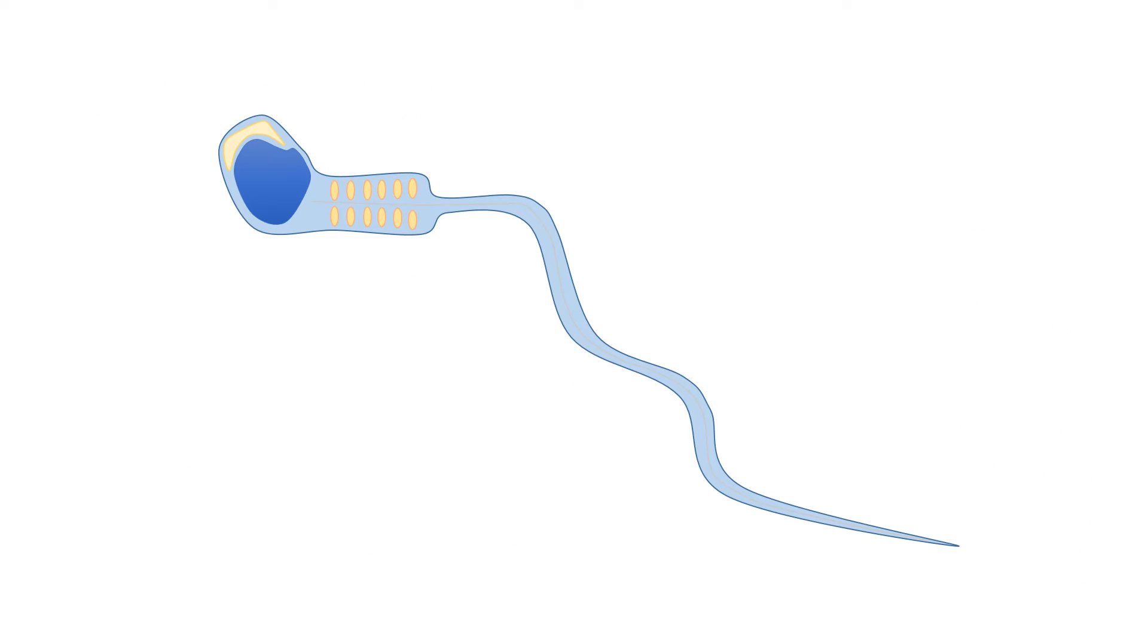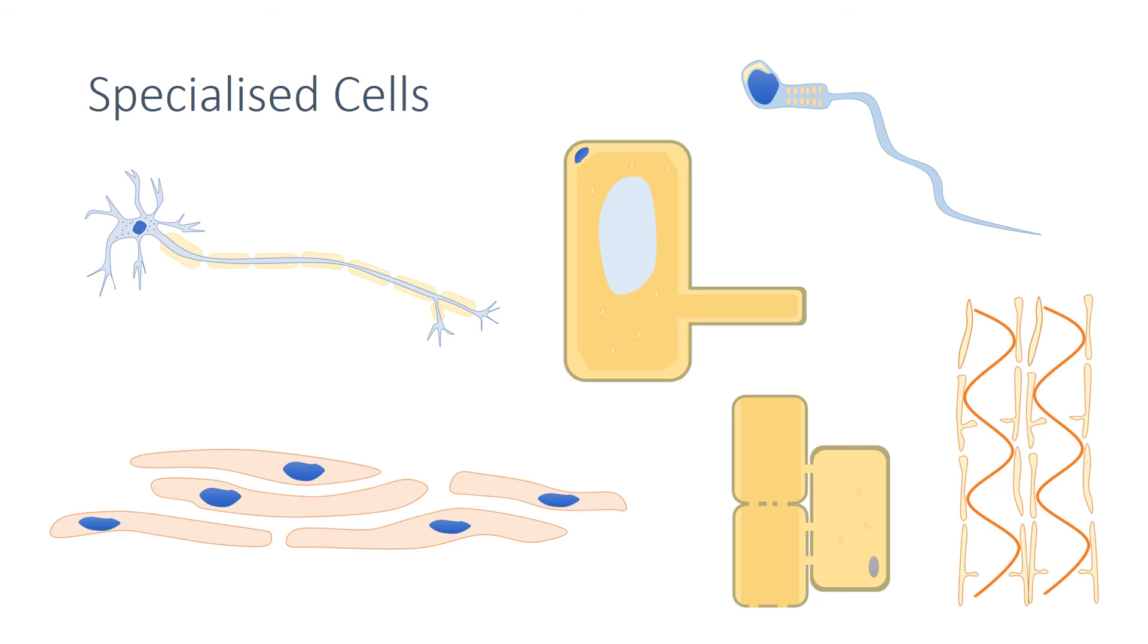To help it do this it has a large nucleus to contain the genetic information to be passed on, a long tail that can whip back and forth to move, plenty of mitochondria to provide energy for movement, and an acrosome packed full of digestive enzymes to break down the outer layer of the egg.